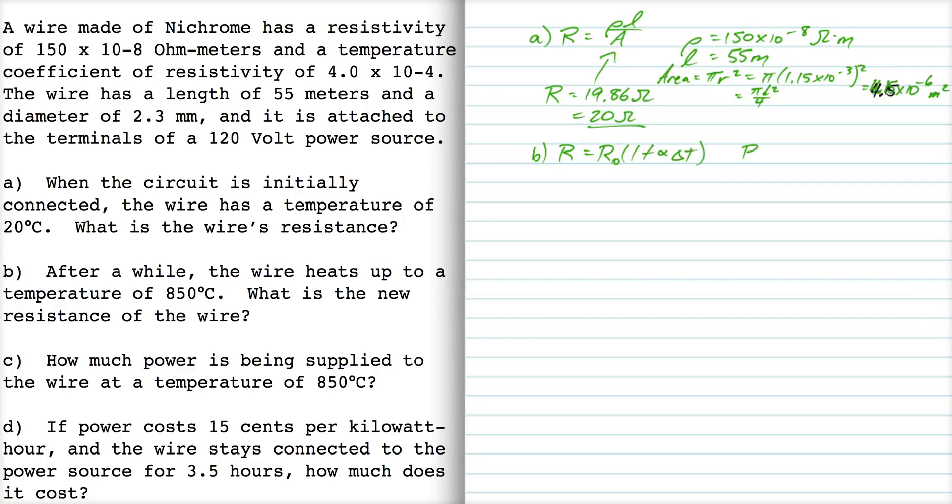Our original resistance is 19.86 and then alpha, the temperature coefficient, is given to be 4.0 times 10 to the minus 4. The temperature difference, we're going from 20 to 850, so that's 830 Celsius, which is the same as a temperature difference of 830 Kelvin.